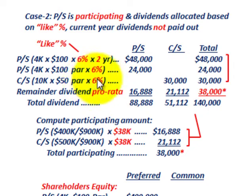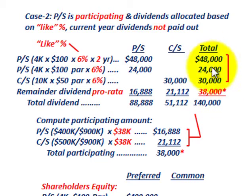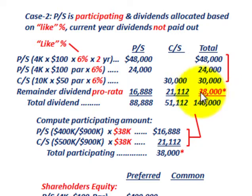For common stock, using a like percentage of 6% times 10,000 shares at $50 par, common stock is allocated dividends of $30,000. Now we have to determine the remainder of dividends to be allocated between preferred and common stock. The total dividend payout is $140,000. We've already allocated $48,000, $24,000, and $30,000, so the remainder is $38,000 — the difference between what was already allocated and the total declared dividends.